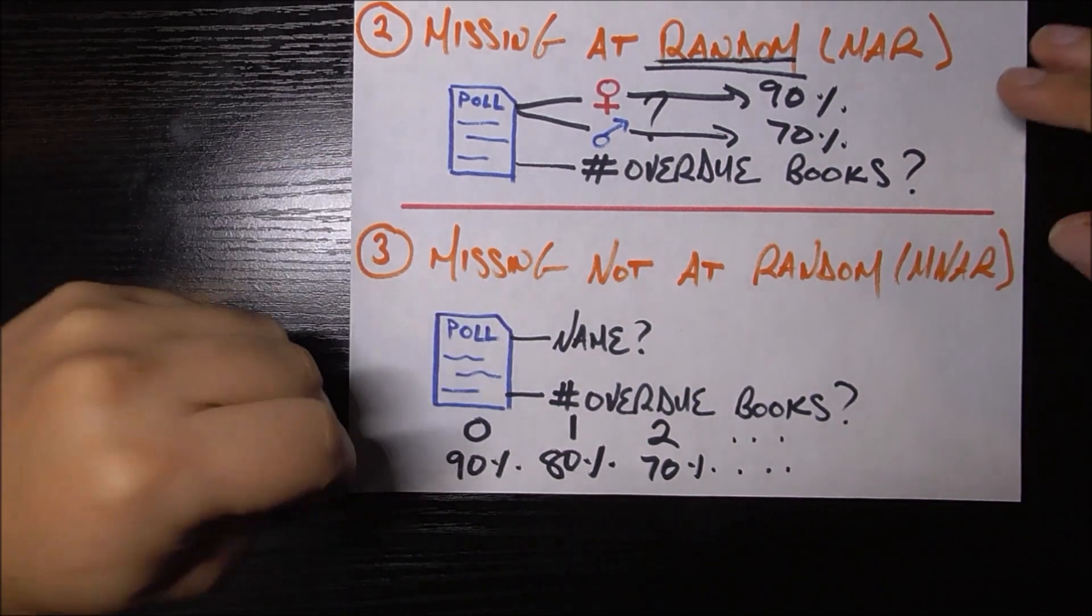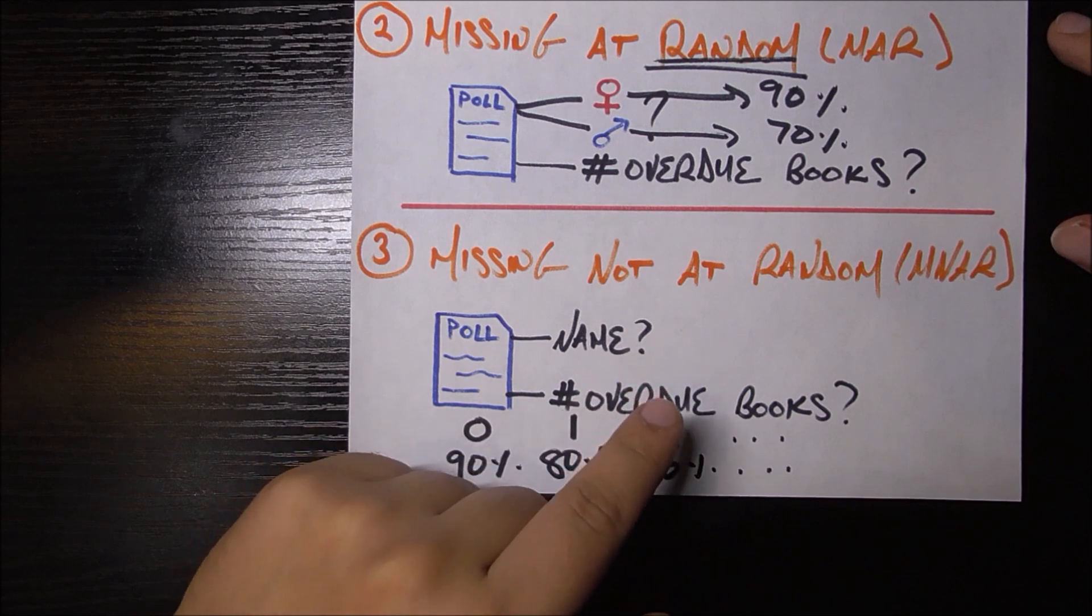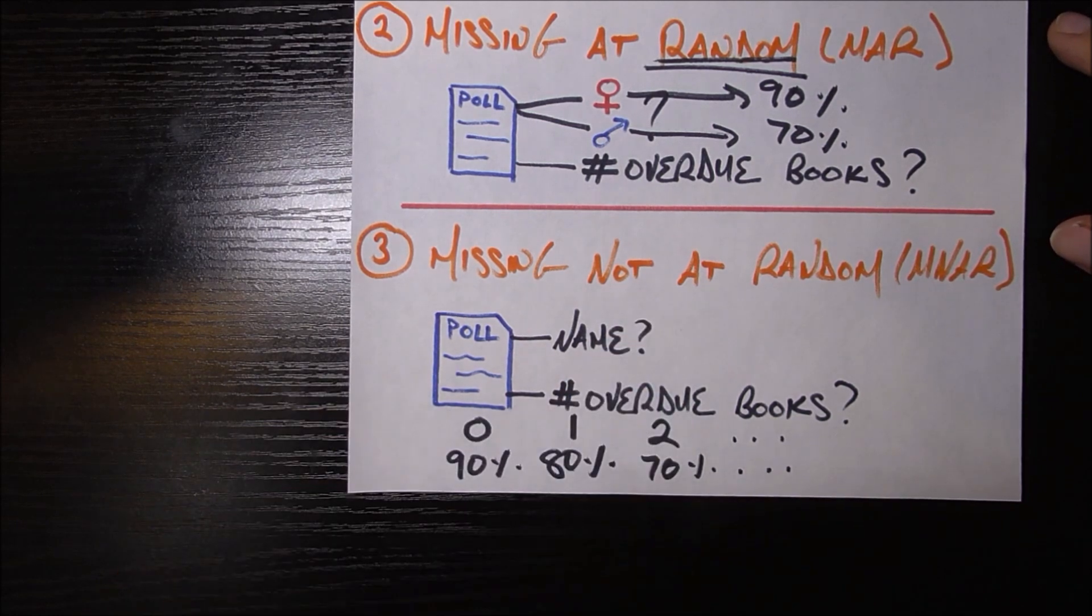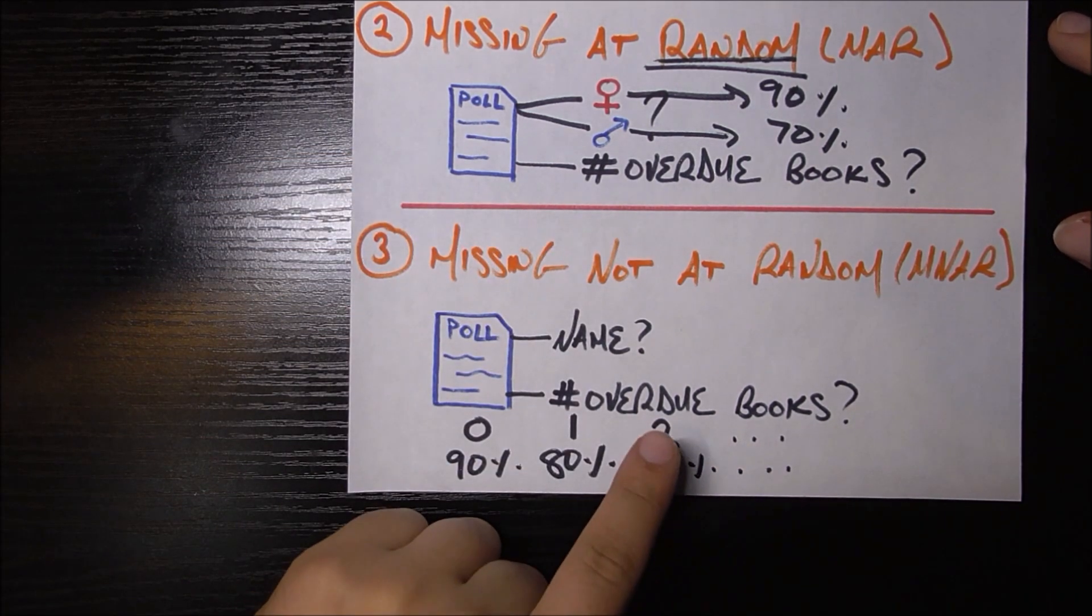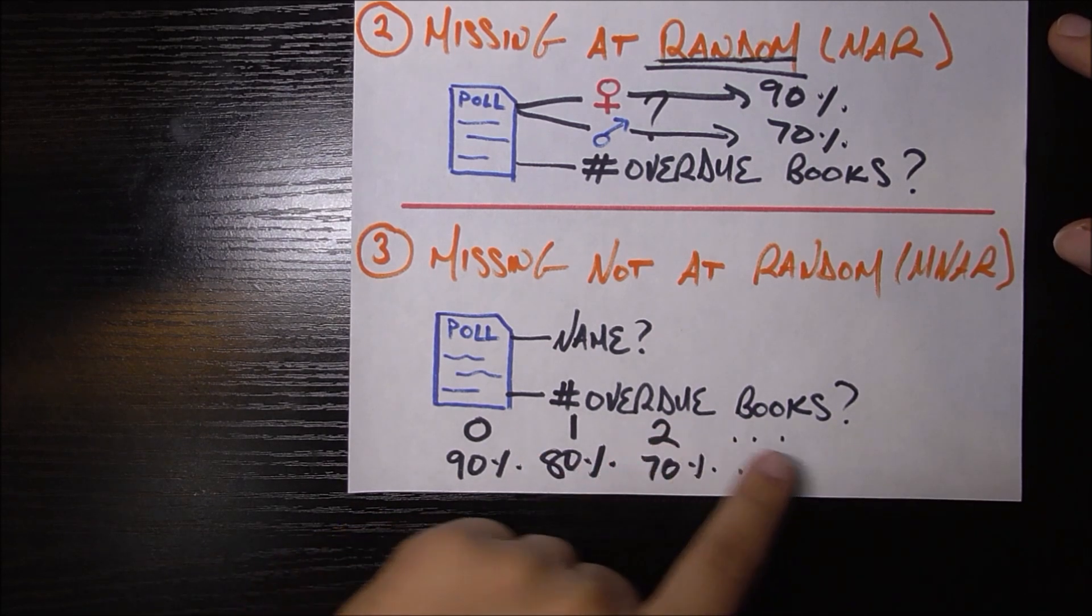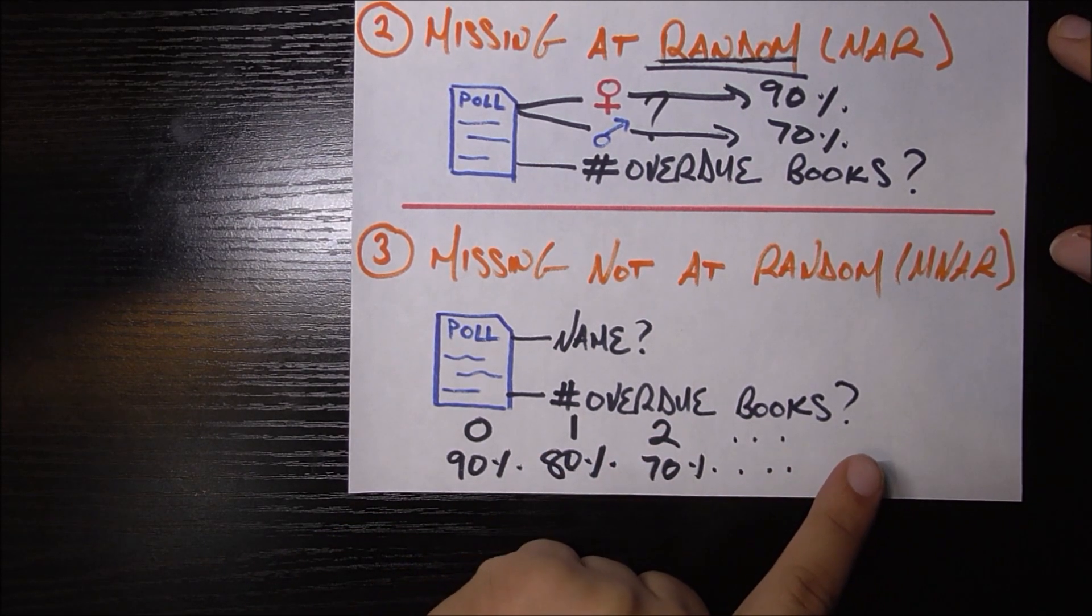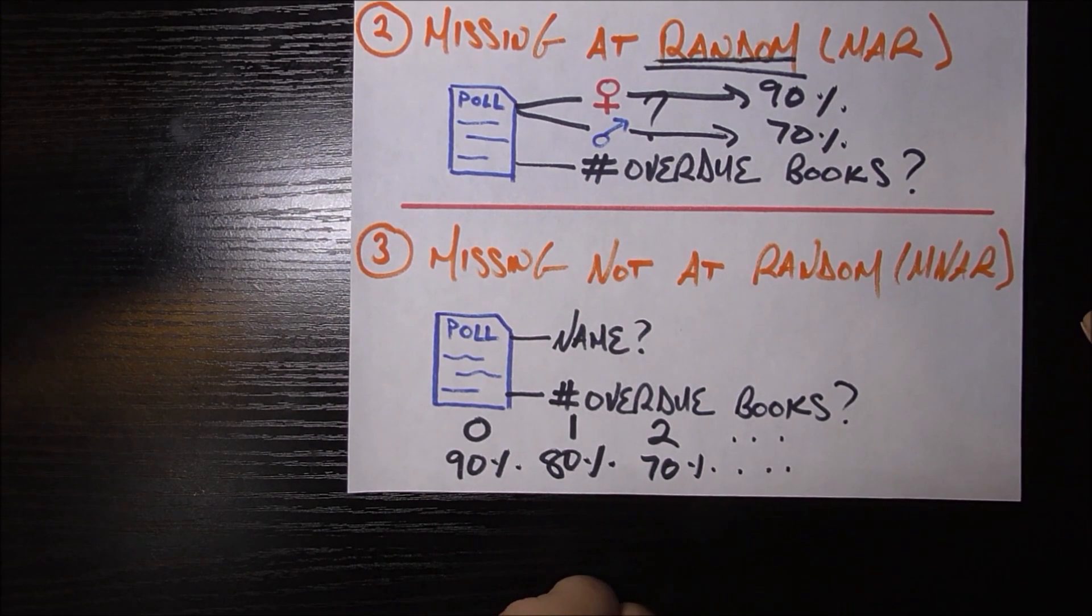Now, so the general idea of missing not at random is that the missingness of a certain value depends on the true value itself. So, for example, if I have a missing value for my number of overdue books, the likelihood of that value to be missing is based on how big that value truly is. If that value is truly very big, if this person has many overdue books in reality, that value is very likely to be missing.